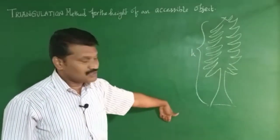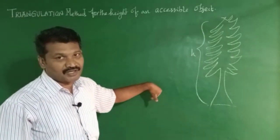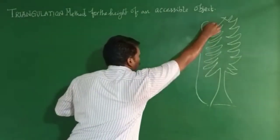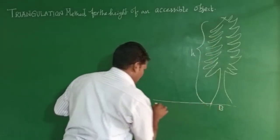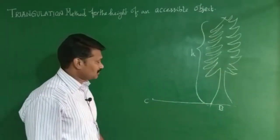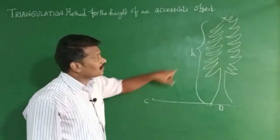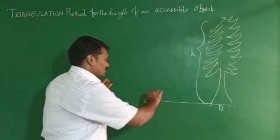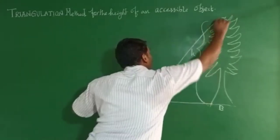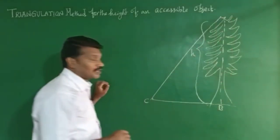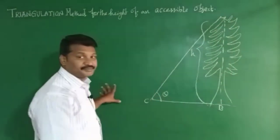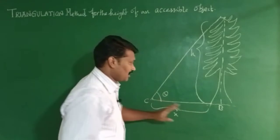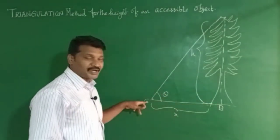We can measure the height of the tree as well as the distance from the tree. If we look at the angle of the tree, we can measure the height. This is the angle of elevation from the point of observation. This is the horizontal distance. The tree is point B, and the observation point C is the distance.